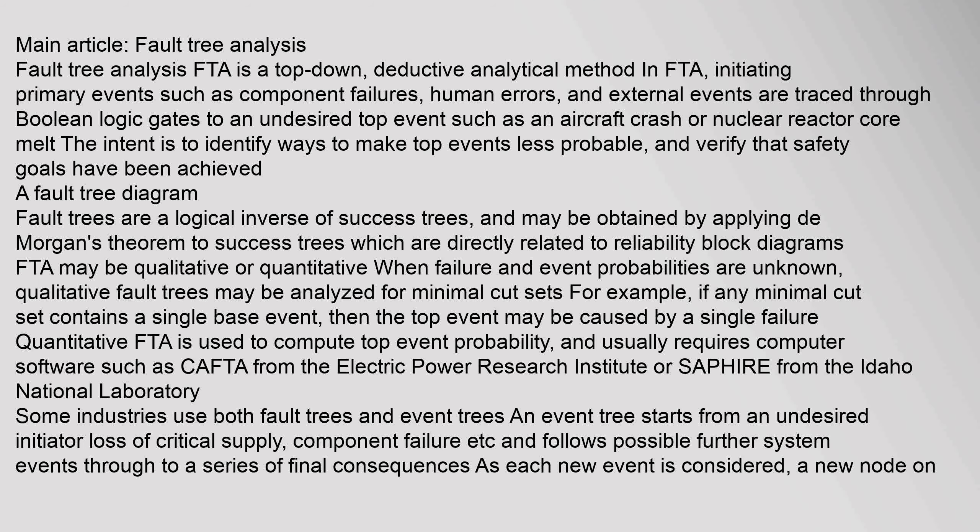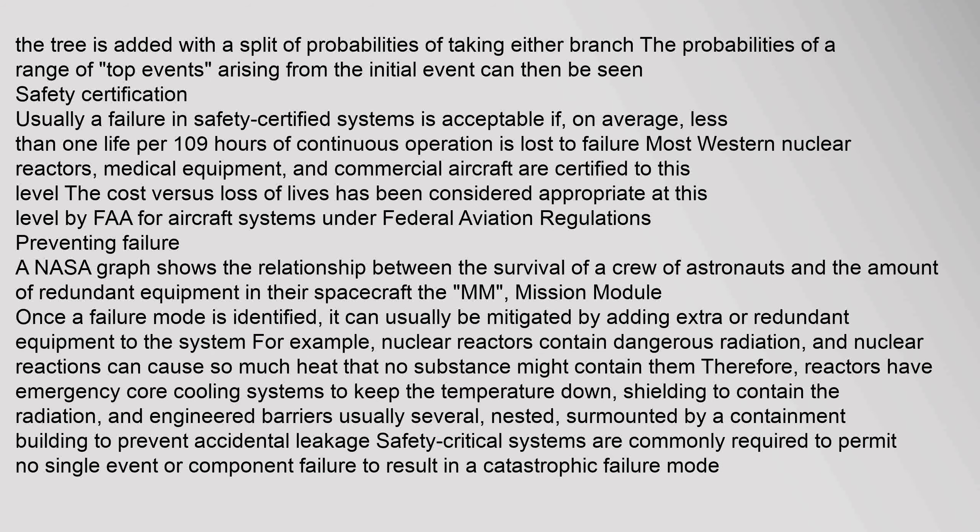Some industries use both fault trees and event trees. An event tree starts from an undesired initiator — loss of critical supply, component failure, etc. — and follows possible further system events through to a series of final consequences. As each new event is considered, a new node on the tree is added with a split of probabilities of taking either branch, so the probabilities of a range of top events arising from the initial event can then be seen.